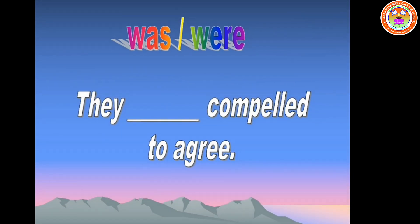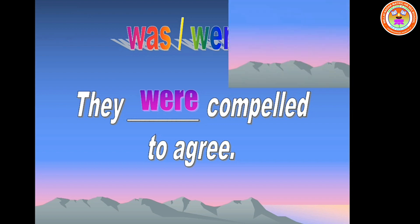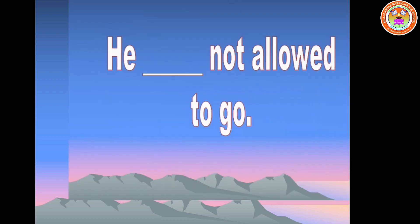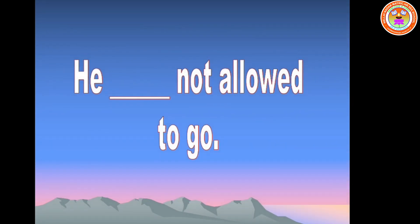Next exercise: was or were. Number one: they dash compelled to agree. They is a plural pronoun, so we have to use were. They were compelled to agree. Next: you dash allowed to go. After you, we have to use were. The answer is were. You were allowed to go. Next: he dash not allowed to go. He is a singular pronoun, so we have to use was. He was not allowed to go.